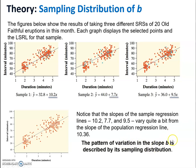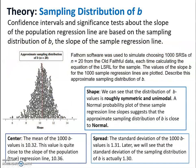The pattern of variation is described by its sampling distribution. We have sampling distributions for slope, just like we did for means and proportions. Confidence intervals and significance tests about the slope of the population regression line are based on the sampling distribution of b, which is the slope of the sample regression.